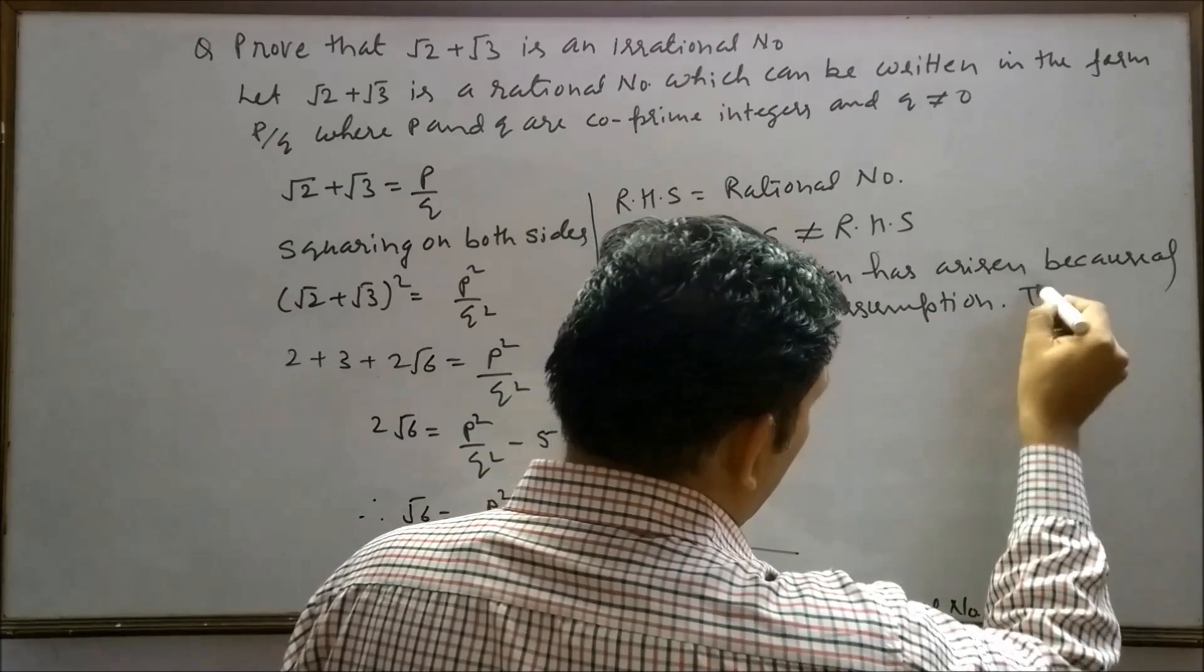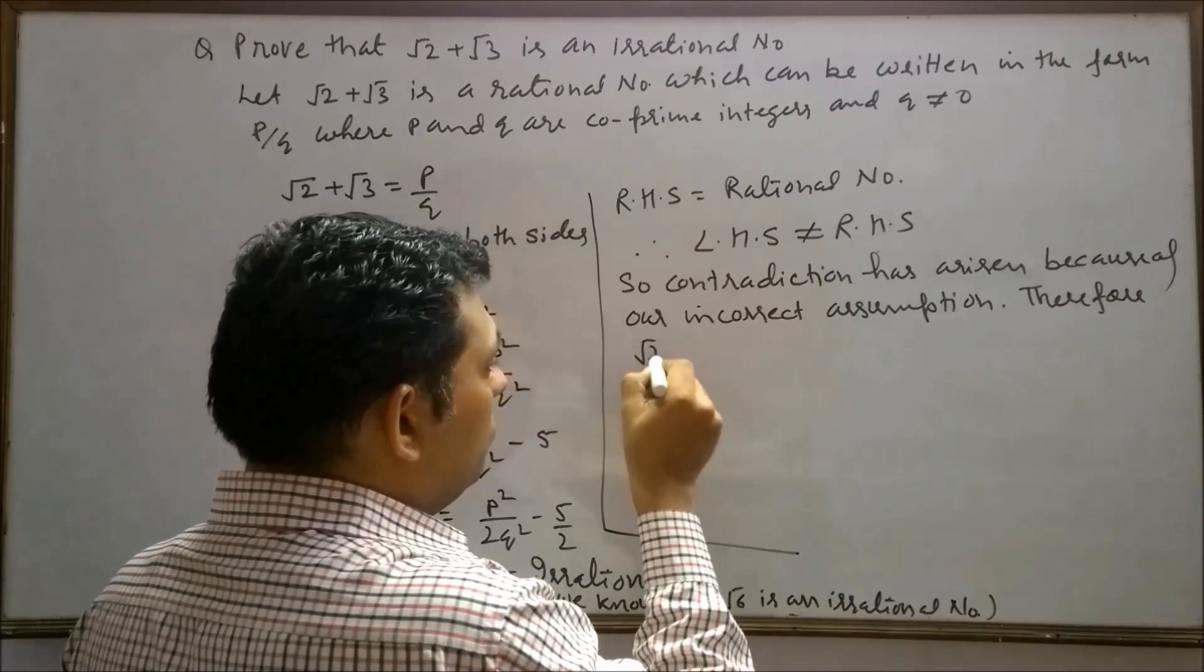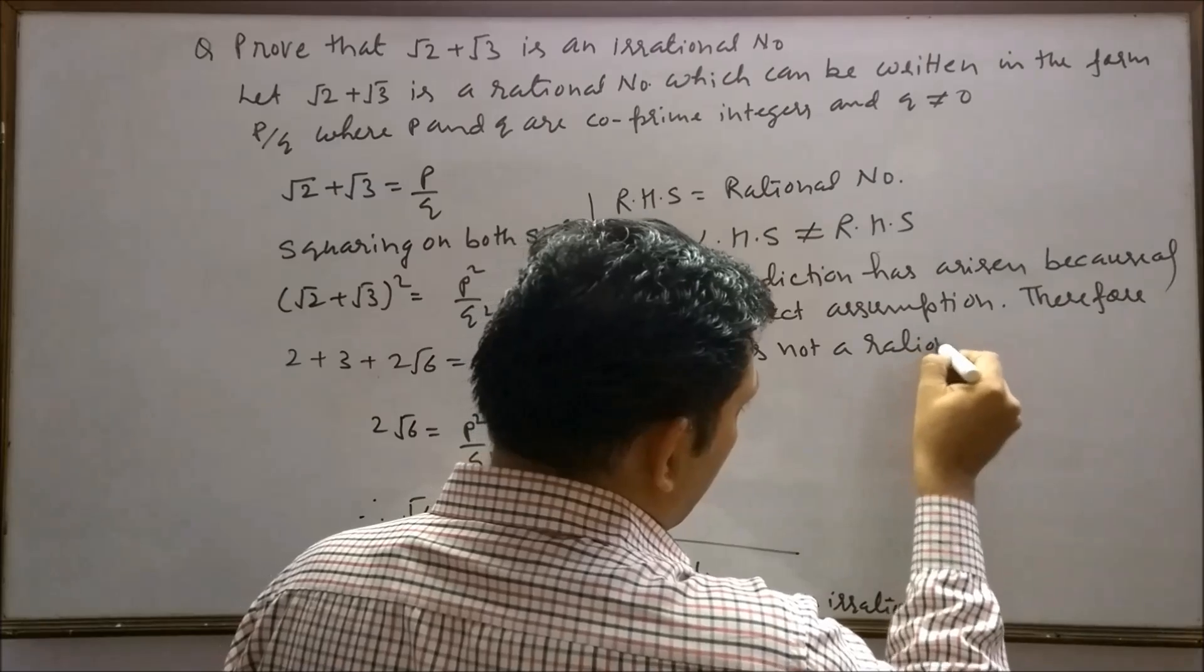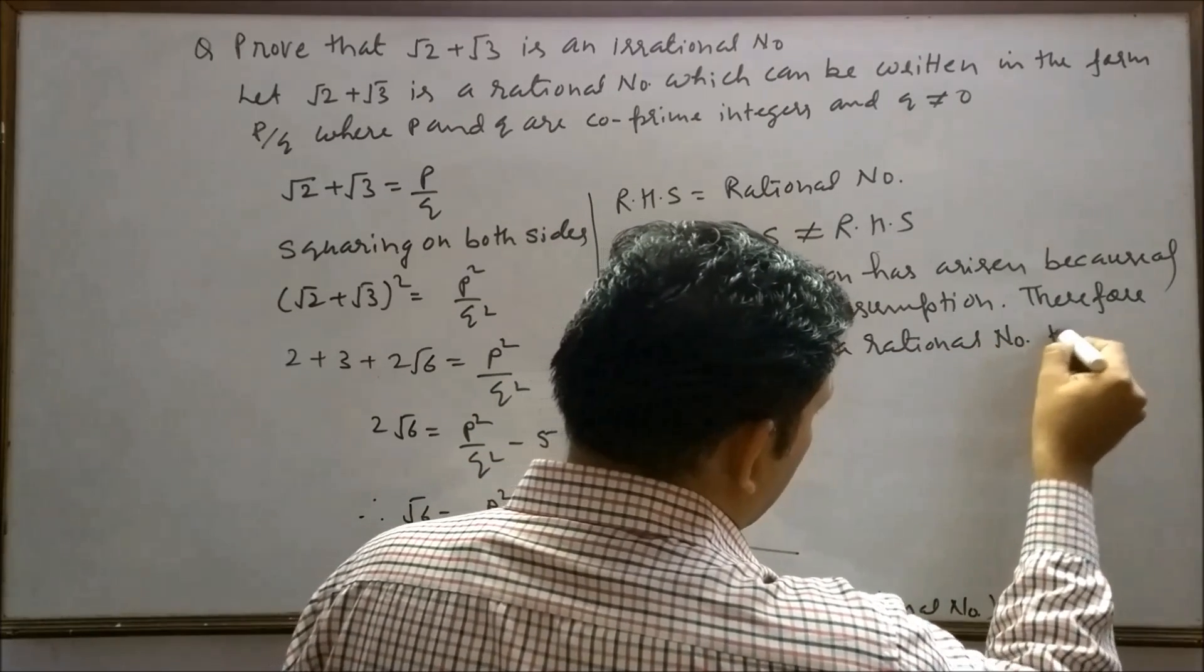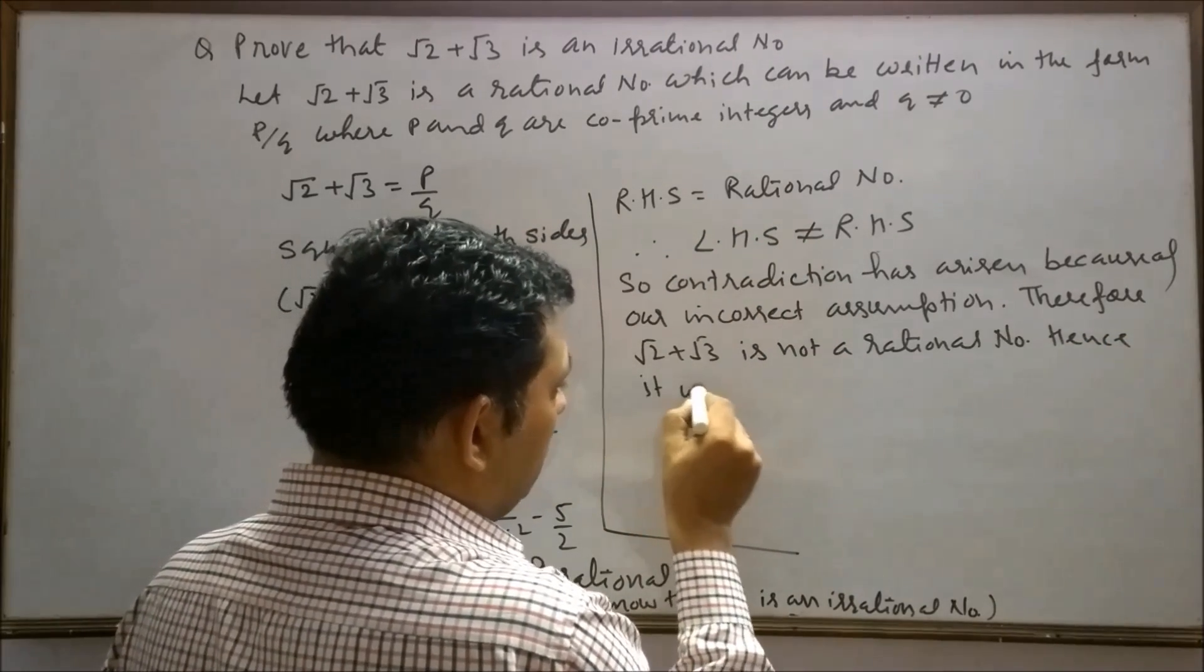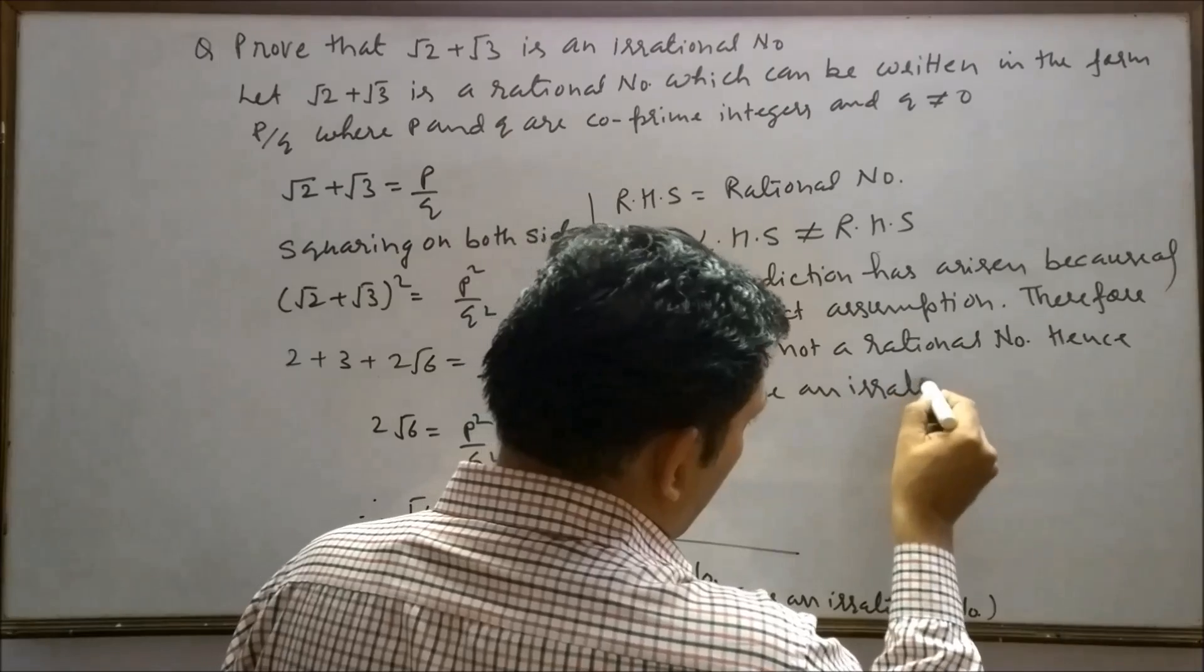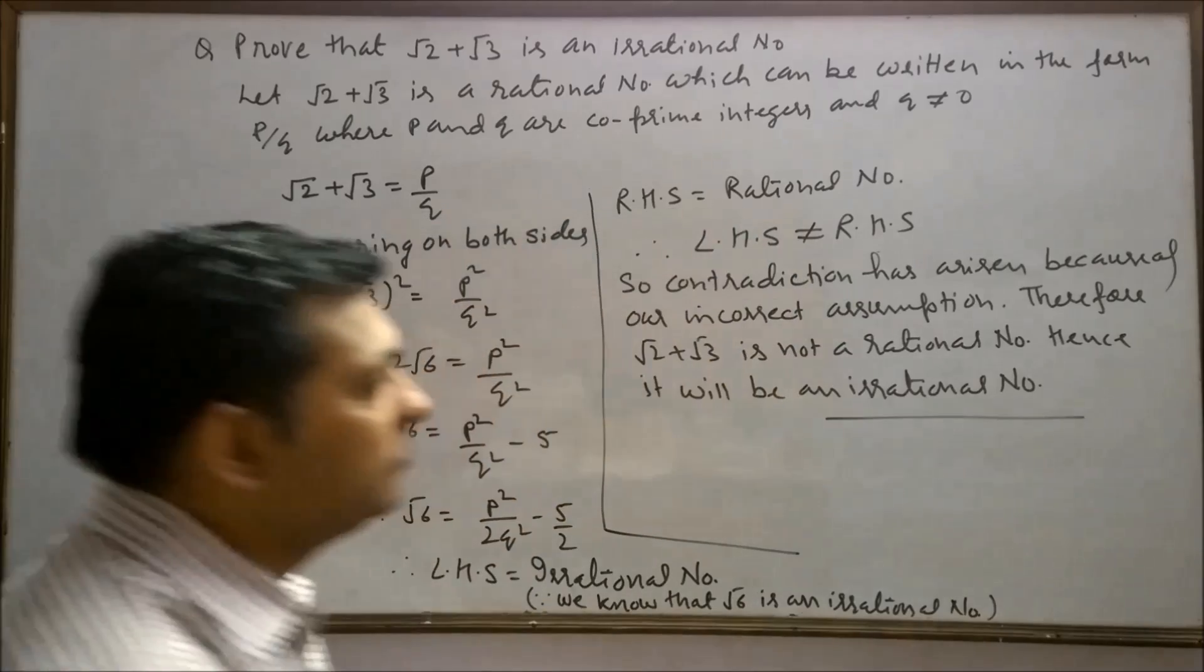Therefore, root 2 plus root 3 is not a rational number. Hence, it will be an irrational number. And proved.